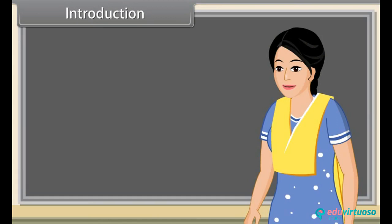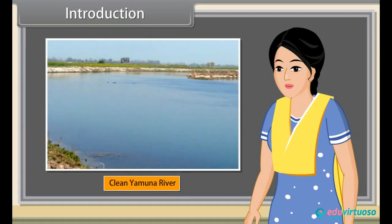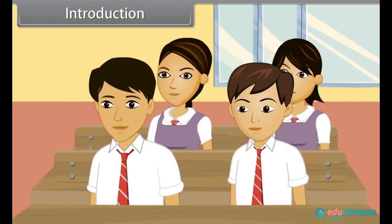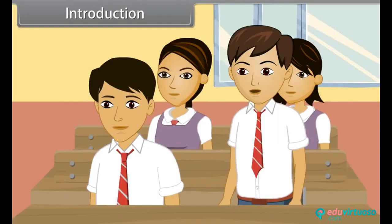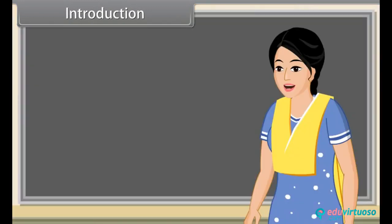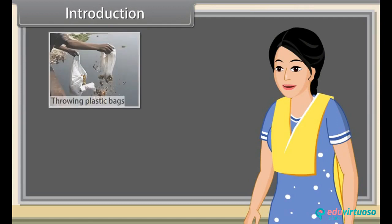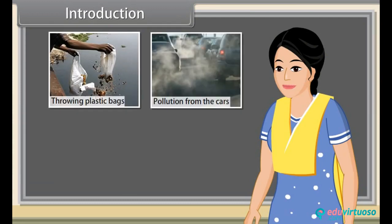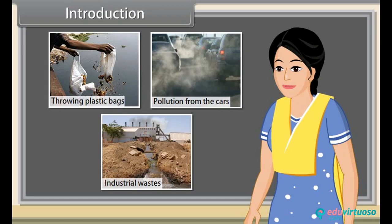Yamuna River is now one of the most polluted rivers of India, but it was clean before. Have a look. Our activities have made it polluted and it appears dirty. How are we making this river polluted? Many of our activities destroy the clean state of rivers, such as throwing plastic bags, pollution from cars, and dumping of industrial wastes. Let us explore them in detail and their effects on our environment.